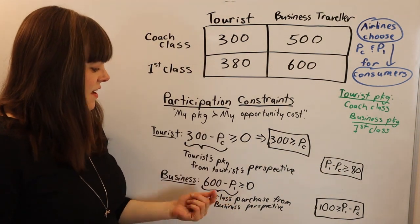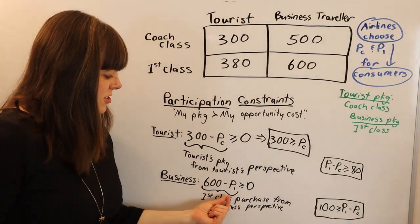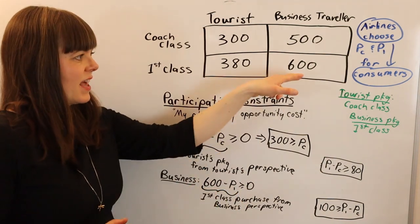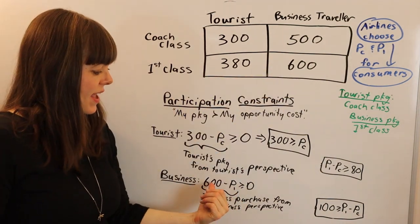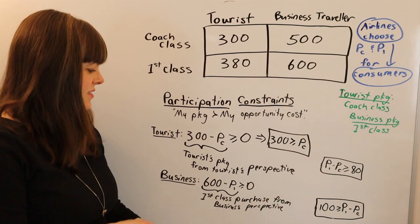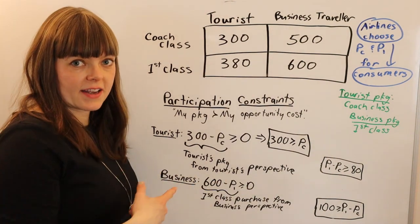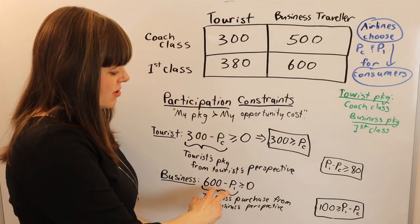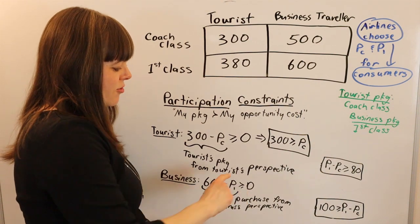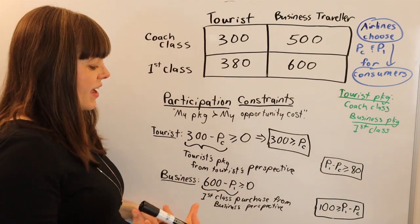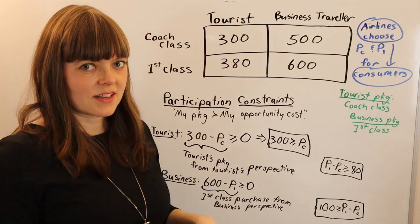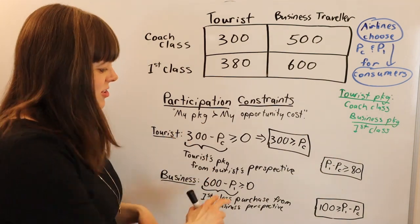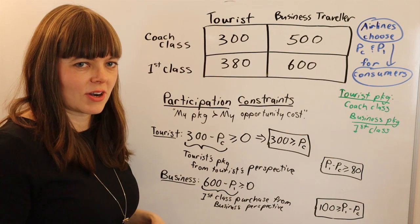From the business person's perspective: the business traveler gets the first class ticket and pays the first class price — the same package as in the incentive compatibility constraint. Their value of $600 minus the price of first class needs to be greater than or equal to zero, which implies the price of the first class ticket must be less than or equal to $600.